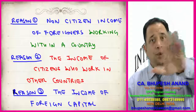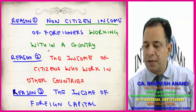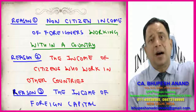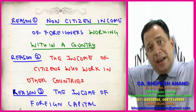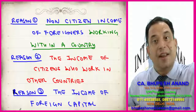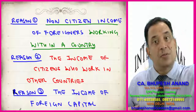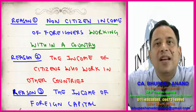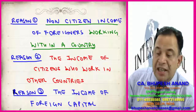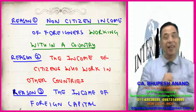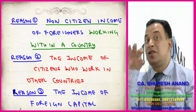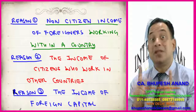First: non-citizen income of foreigners working within a country. For example, Mr. Smith is a citizen of Japan working with Suzuki in Japan, but has been employed by Suzuki to work in India. Mr. Smith is a foreigner — not a citizen of India — and he is getting salary from Suzuki working in India. So this is reason number one: non-citizen income of foreigners working within a country. This will be included in GDP but not in GNP, since Mr. Smith is not a citizen of India.